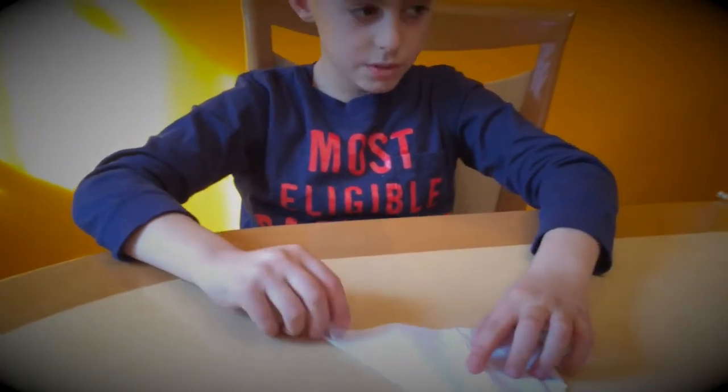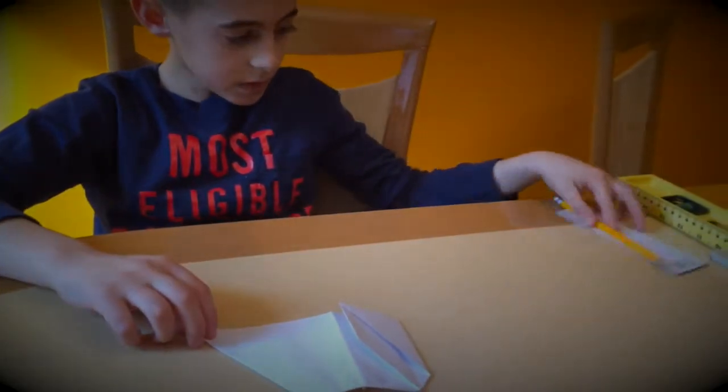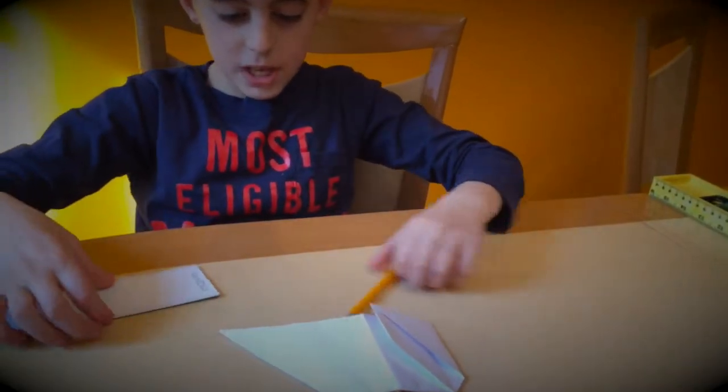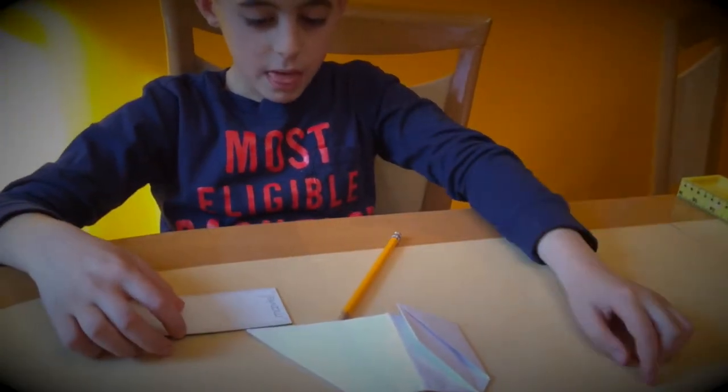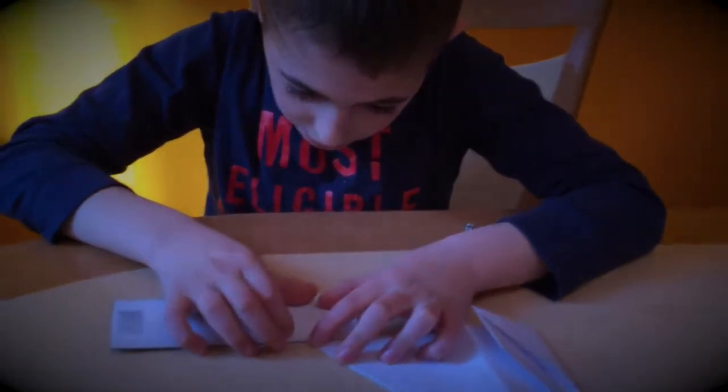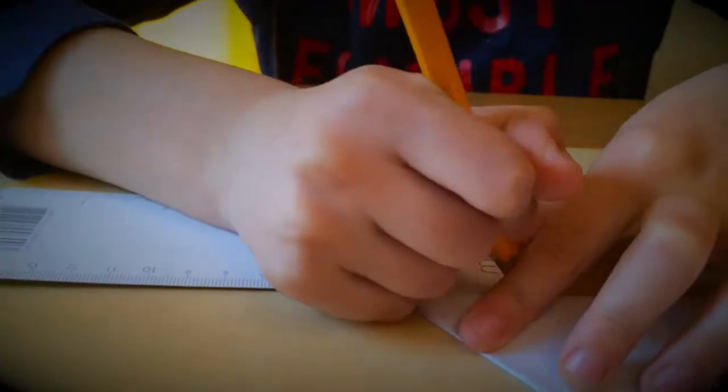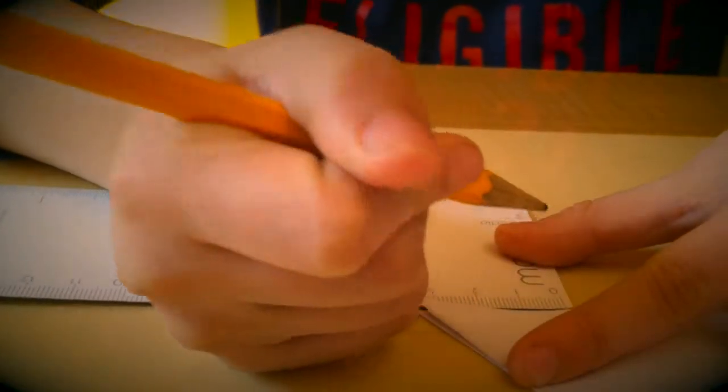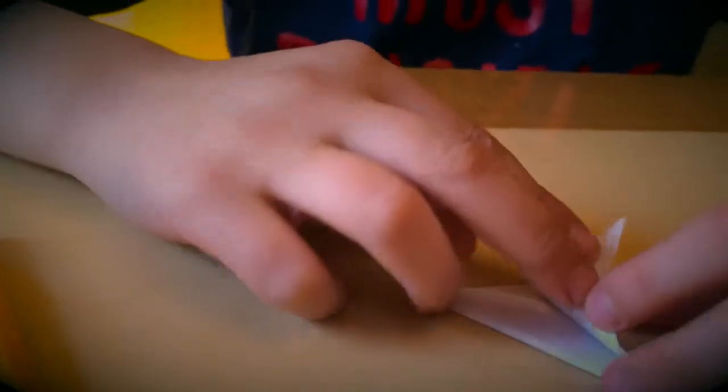You will need a ruler. And do the same step that we did the first time on the other side. So we have to make 3.5 centimeters and trace it, and make a line out where it ends. Now we are going to fold.